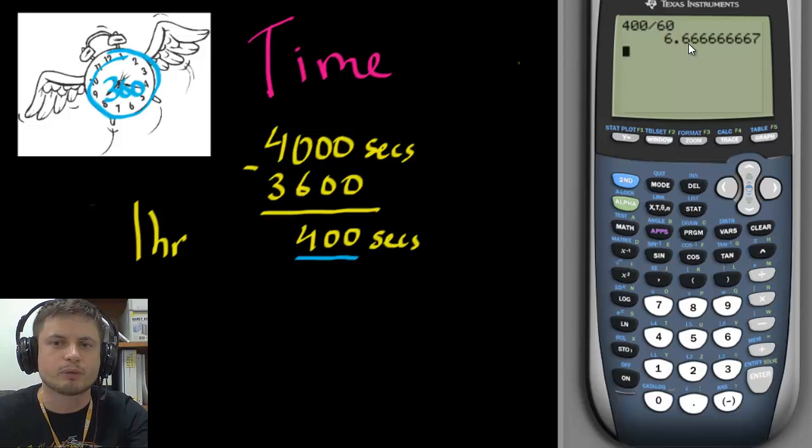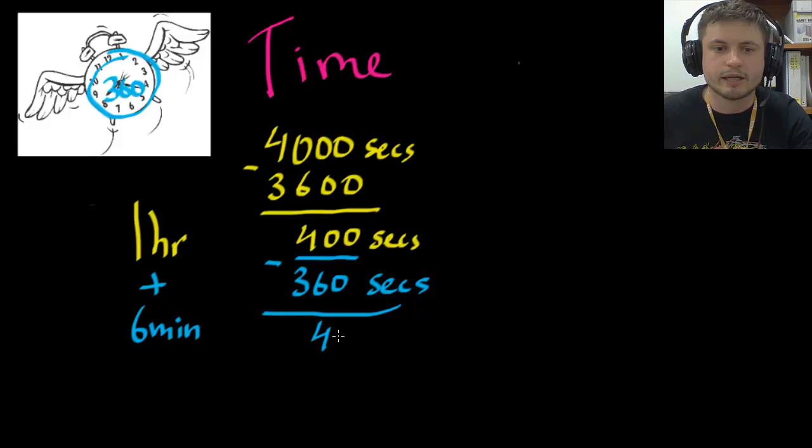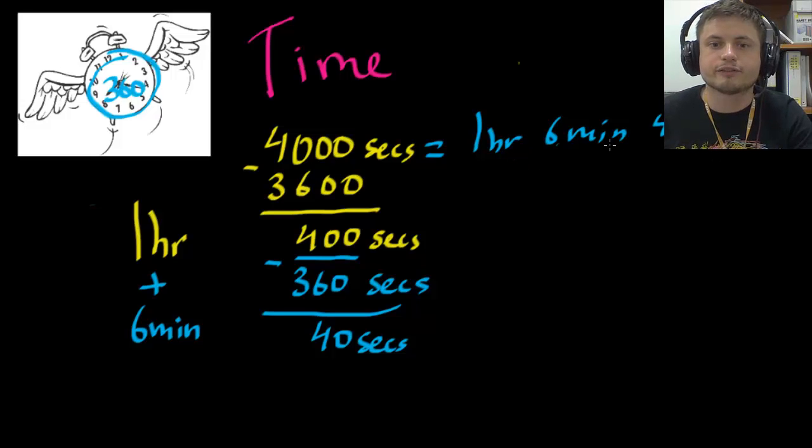But we can't really write it in this way. We have to still use seconds. So we're going to write it as 6 minutes. And then we're going to find a difference between 400 seconds and whatever 6 minutes is. And 6 times 60 is 360. So minus 360 seconds, which leaves us with 40 seconds. So in other words this equals to 1 hour, 6 minutes and 40 seconds. And that's the answer.